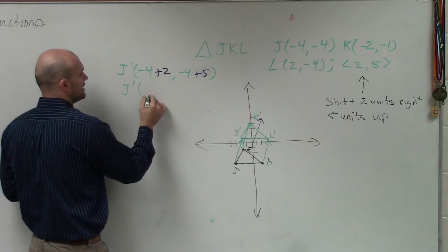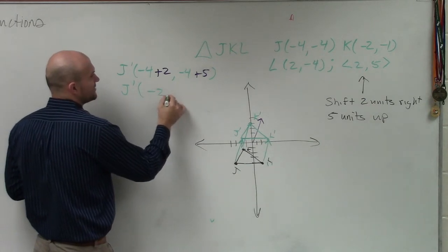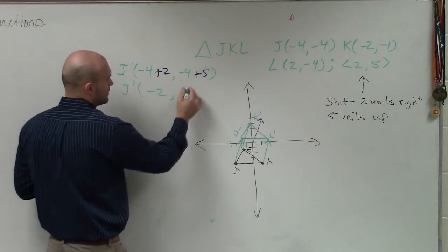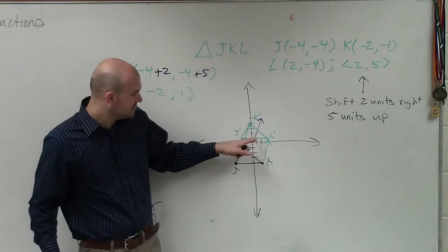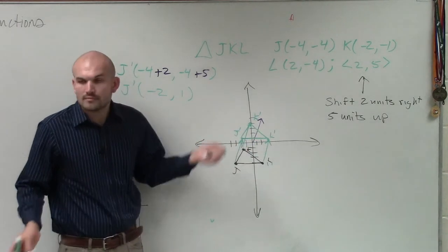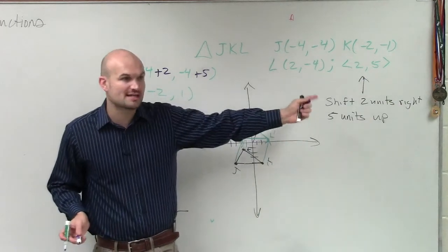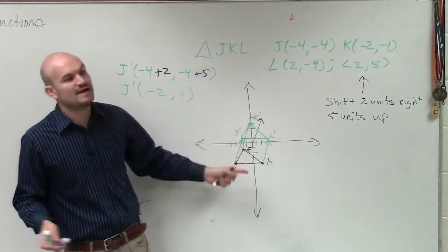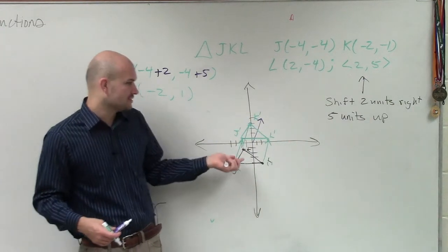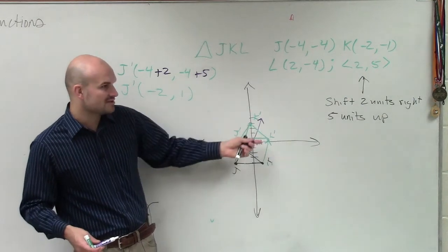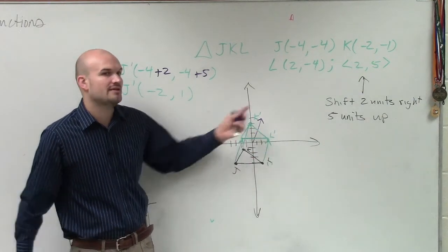And let's see, is that where J prime is? Negative 2, up 1. And yes, the same thing. So you can algebraically transform each of your points and then re-plot them. Or you could also just look at the graph and apply what the transformation vector is, apply that to each point, and then re-graph it.